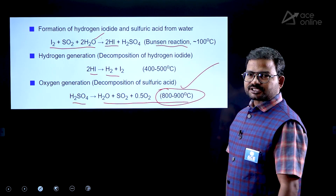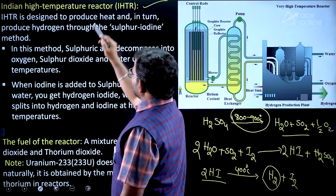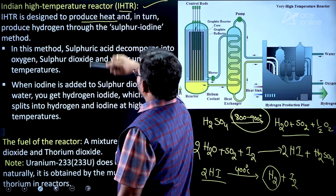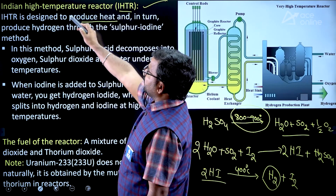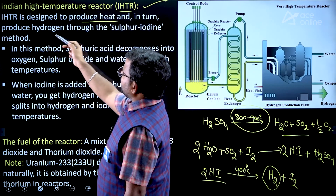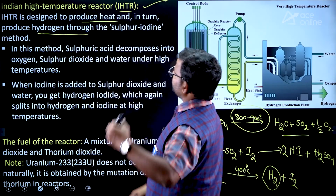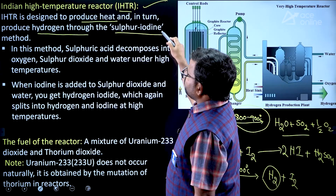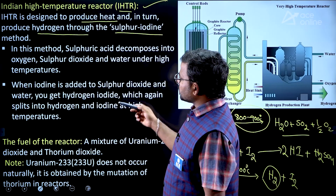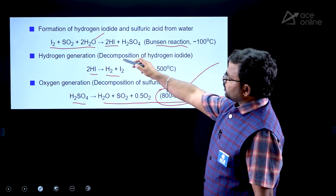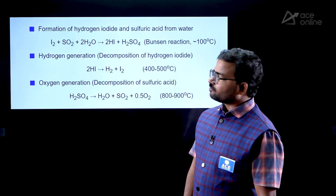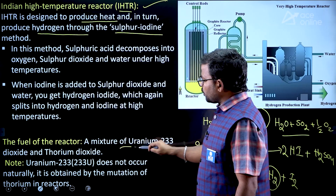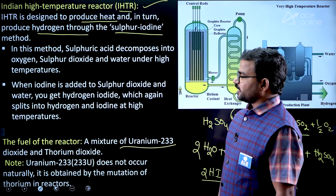This is the major concept: the maximum amount of heat produced in the reactor — that is why it is named the Indian High Temperature Reactor. After heat production, the sulfur-iodine method is used. In the reactor, the fuel chemical used is uranium-233. Natural uranium is U-238, but here concentrated uranium-233 is required.